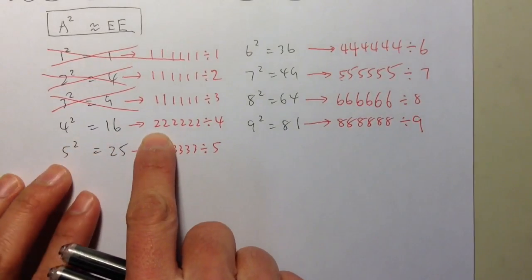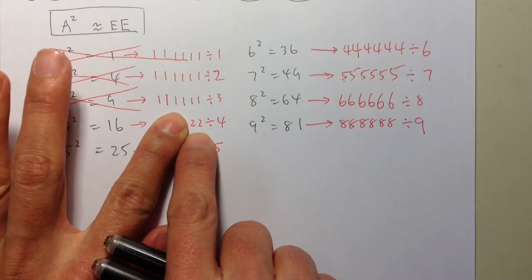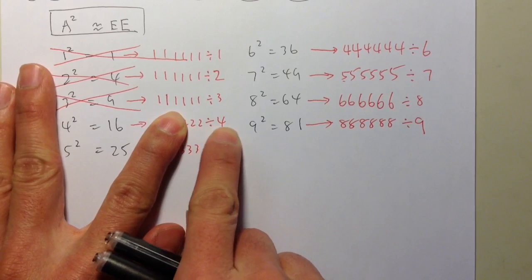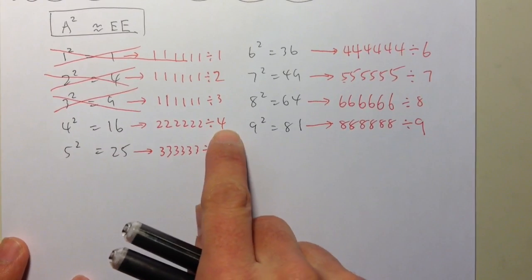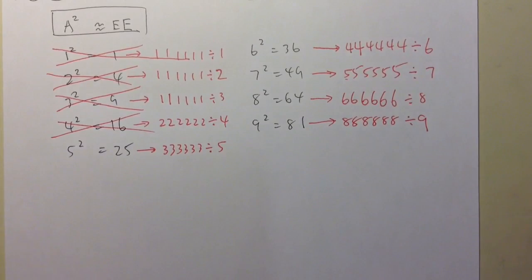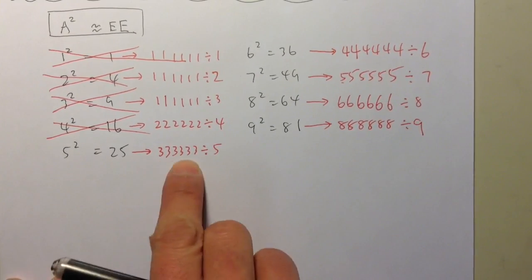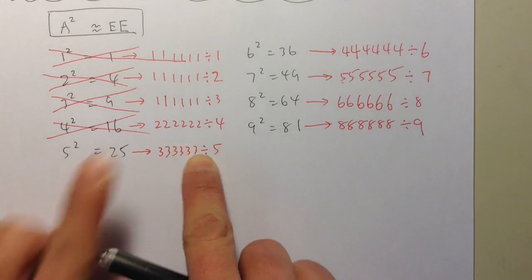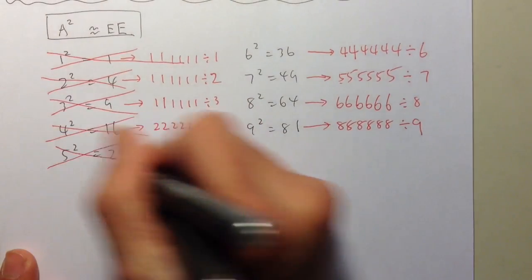For 222222 ÷ 4: since the last two digits are 22, and 22 is not divisible by 4, I know this number is not divisible by 4 — so I can get rid of this. And for 333333 ÷ 5: the last digit is 3, which is neither 5 nor 0, so this number is not divisible by 5. I can eliminate that as well.